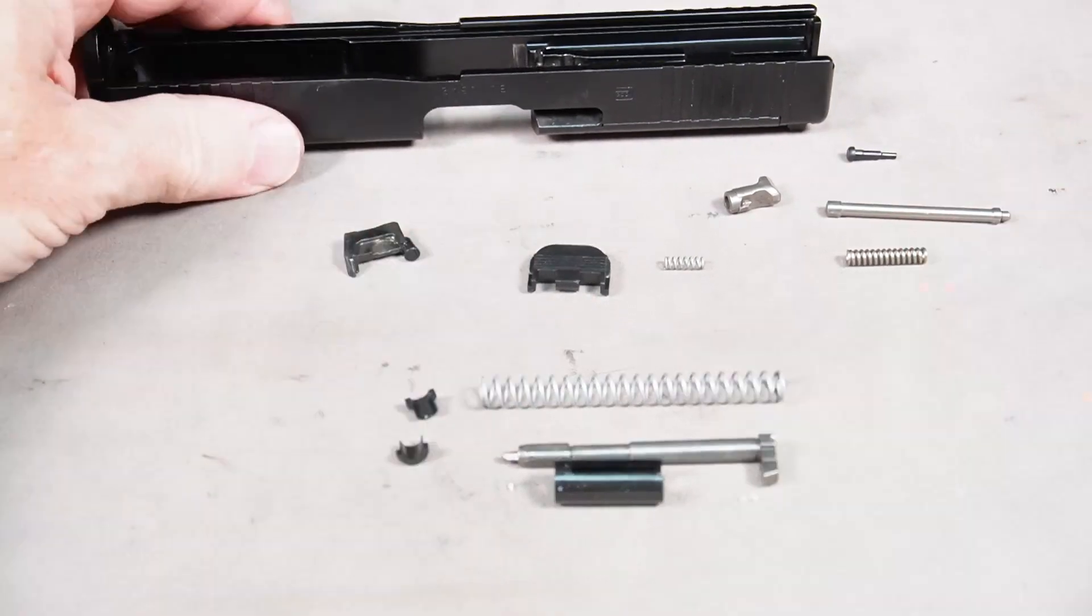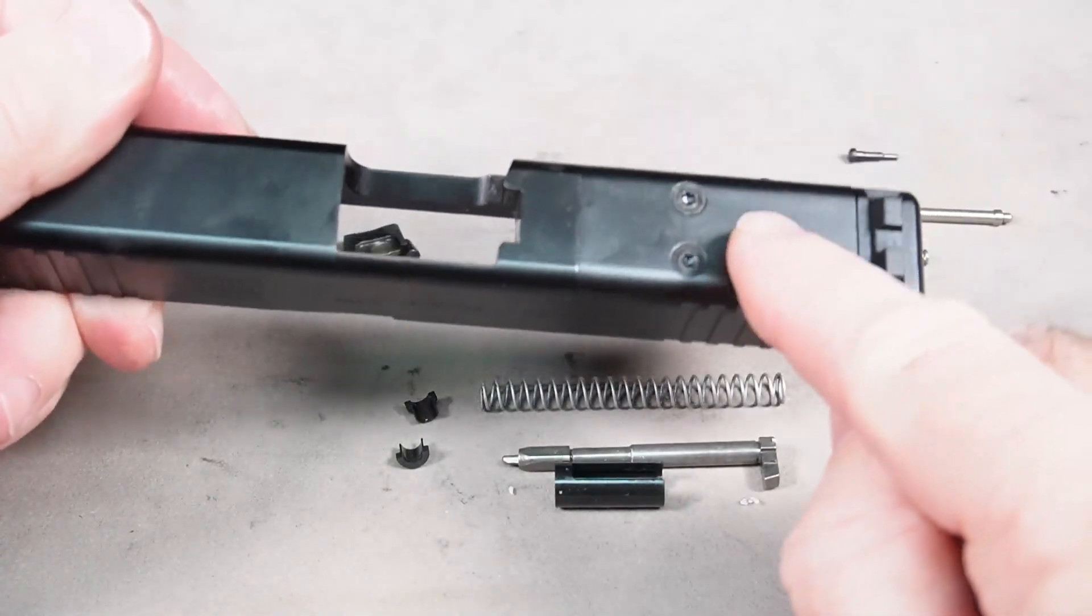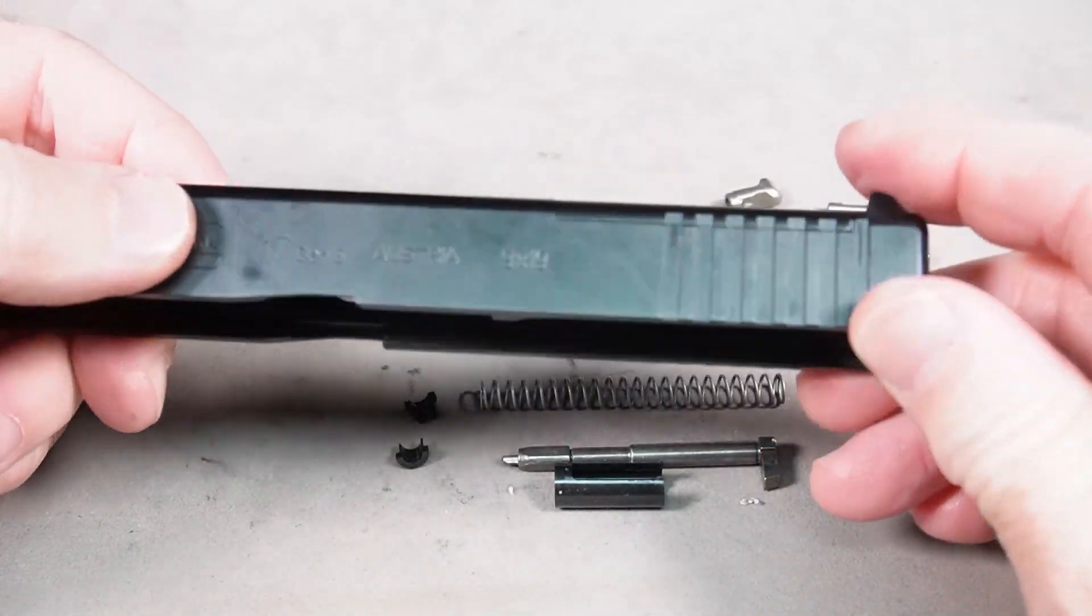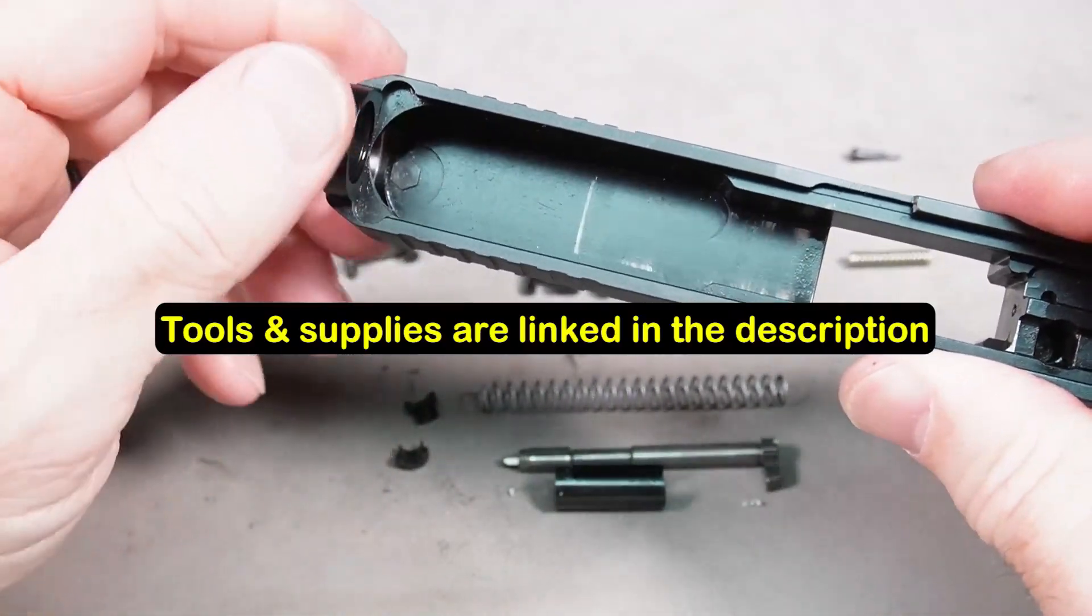All right, and there's all your pieces. This is as far apart as your slide really comes apart. I could take this optic cover off, but that's not really necessary. There's nothing under there. And the front sight I haven't taken off. There's a special tool for that.